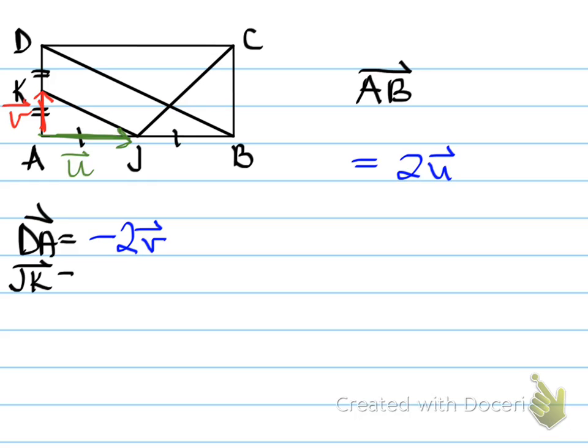Last one, vector JK. What does that mean? You need to go from J to K. Well, if we remember the addition properties, we should remember that it's going to be negative vector u plus vector v. What is that also equivalent to? Vector v minus vector u is an equivalent statement.